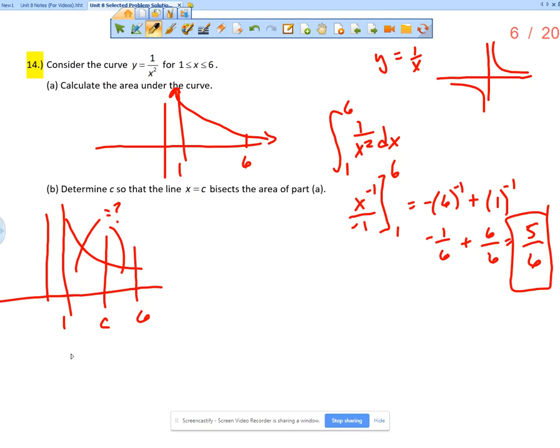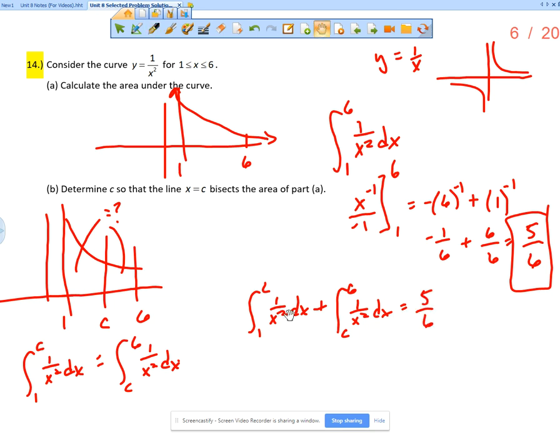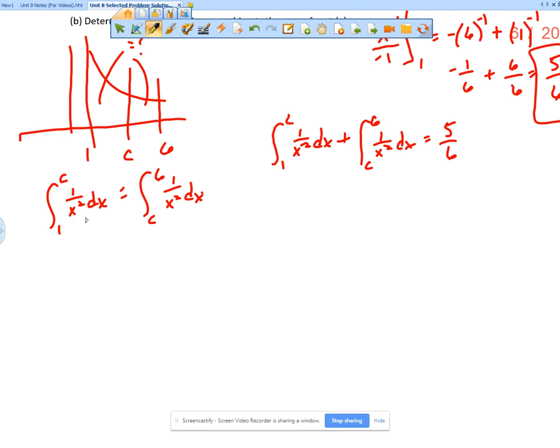You could write that the integral from 1 to C of 1 over x squared dx is equal to the integral from C to 6 of 1 over x squared dx. That's one way you could say it. The other way you could say it, well, you know the total area is 5 sixths. And so you could say that the integral from 1 to C plus the integral from C to 6 equals 5 over 6. So either way, you're going to have basically the same equation. I'm going to choose the first one that I did.